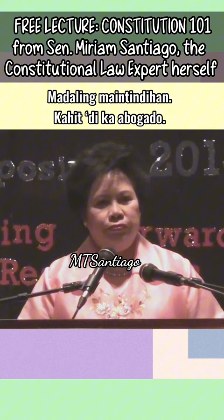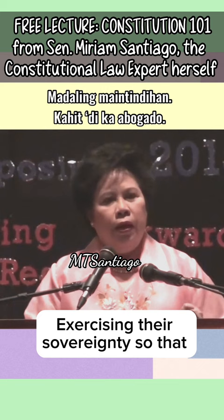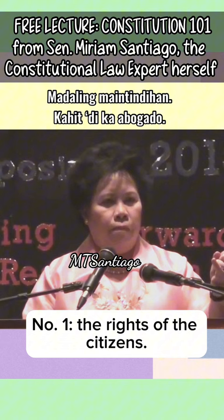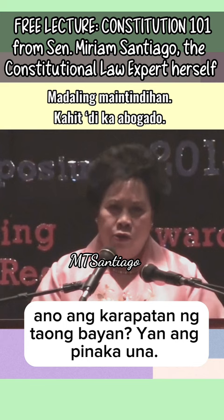Exercising their common sovereignty. Because they are one community, they have sovereign power — meaning, no one rules over them but themselves. Exercising their sovereignty so that they can define, number one, the rights of the citizens. That is the primordial function of a constitution — to enumerate in clear categorical terms the rights of the people. That is the first function.